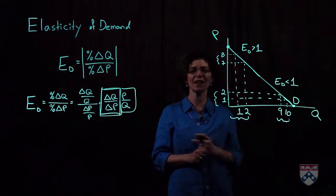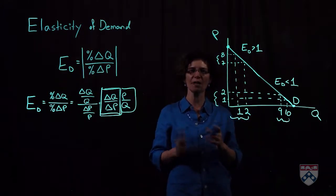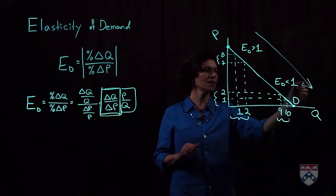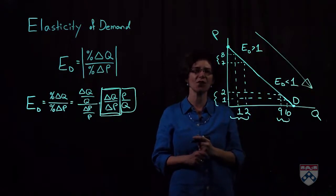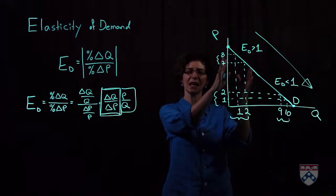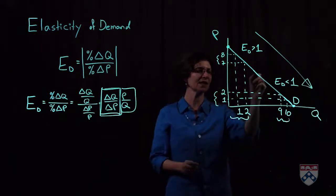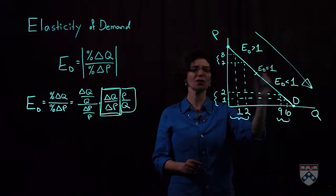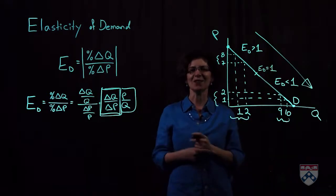So again, along a straight line demand curve, slope is constant, but not elasticity. As we go down in this direction, elasticity drops, the top part is elastic, the bottom part is inelastic, somewhere in the midpoint there's elasticity equal to one. And let's try and remember that.